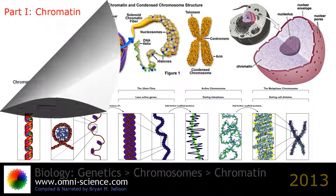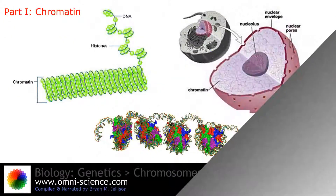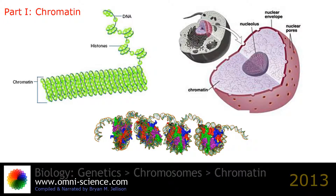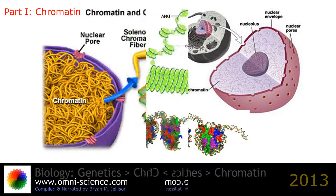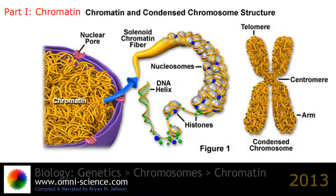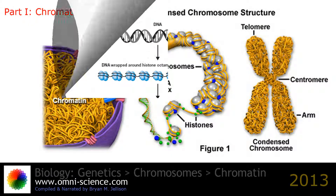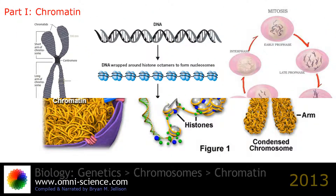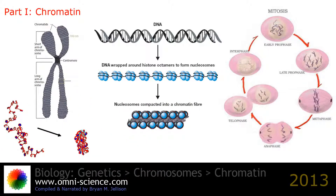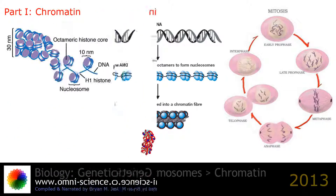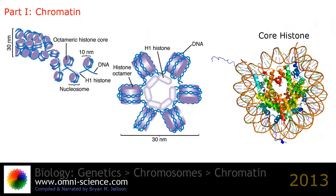Chromatin is the combination of DNA and proteins that make up the contents of the nucleus of a cell. The primary functions of chromatin are to package DNA into a smaller volume to fit in the cell, to strengthen the DNA to allow mitosis, to prevent DNA damage, and to control gene expression and DNA replication. The primary protein components of chromatin are histones that compact the DNA.